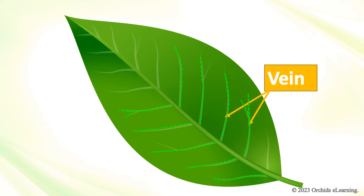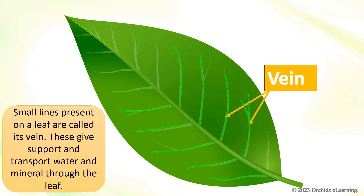Vein. Small lines present on a leaf are called its veins. These give support and transport water and minerals through the leaf.